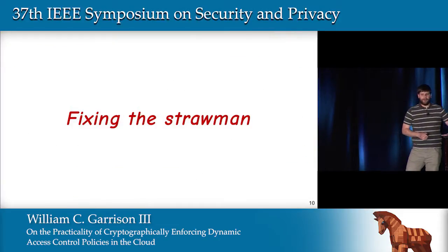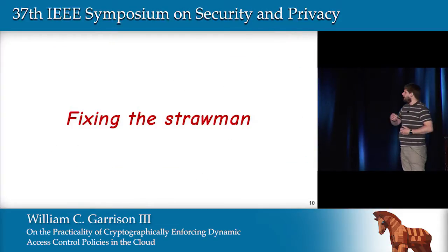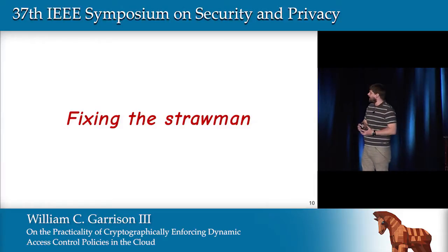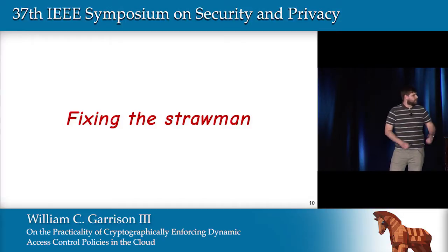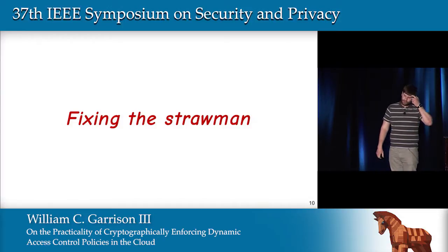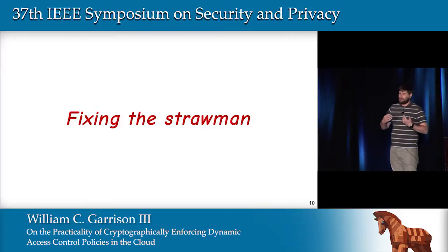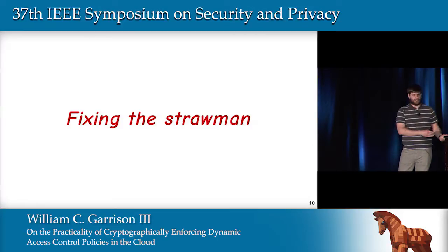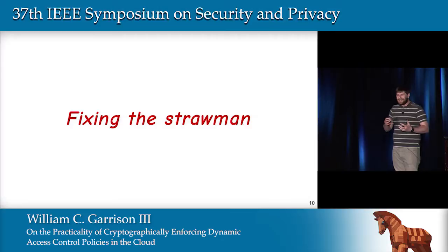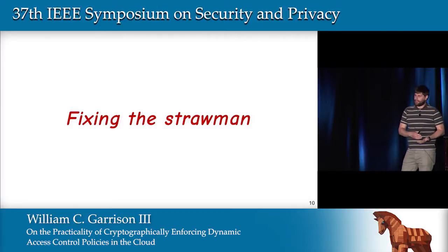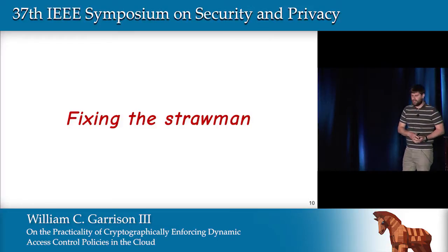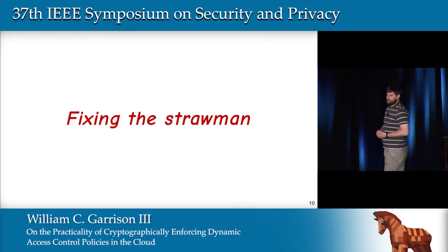So given these issues with the straw man construction, we're going to look at fixing these issues and accommodating a dynamic scenario using a different construction. It's important to reiterate that as we develop this construction, we're making concessions to make sure that we're being optimistic about the costs. We want to favor efficiency in order to get, in a sense, a lower bound on the cost of supporting access control using advanced cryptography.